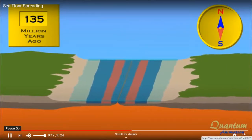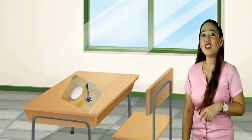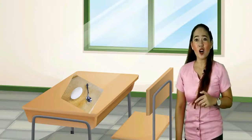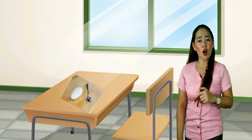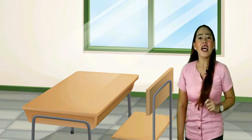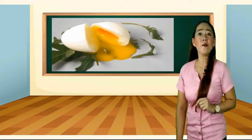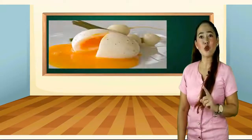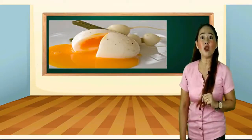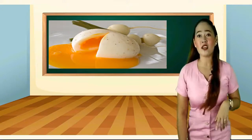Have you tried eating a half-cooked egg? As you cut and open the white part with your spoon, the half-cooked egg yolk flows out. The divergence of plates is somewhat similar to splitting open an egg — as it opens, the half-cooked egg yolk gradually flows out, and when it cools down, it becomes solid.